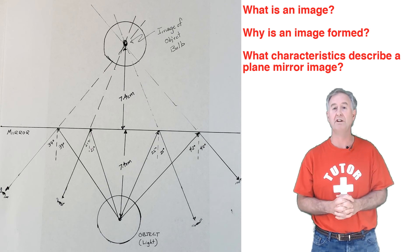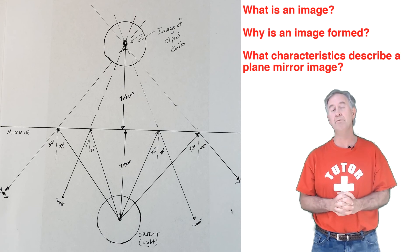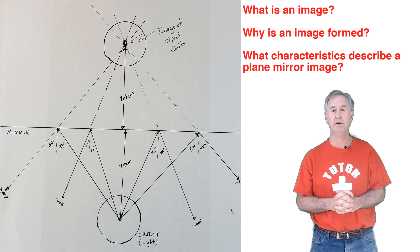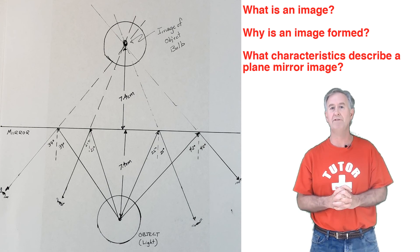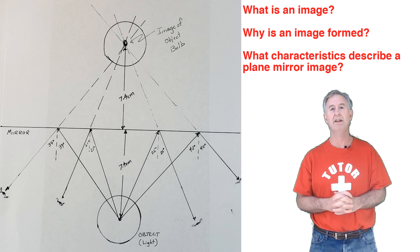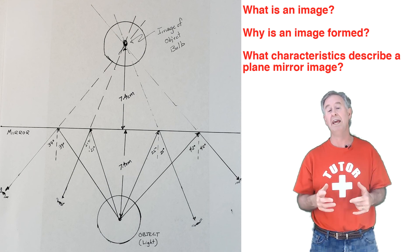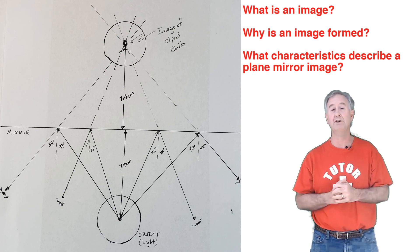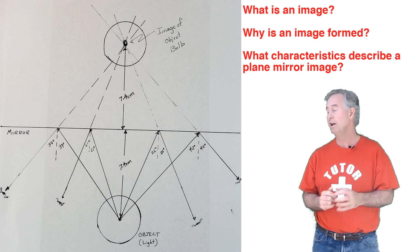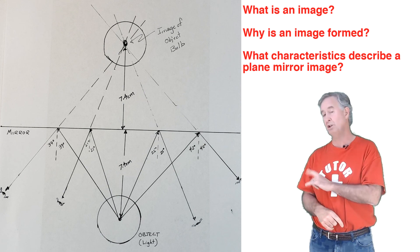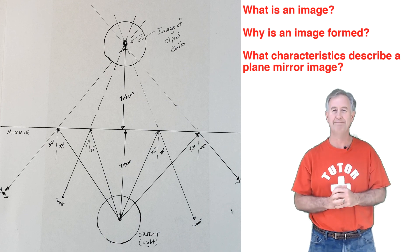As for the characteristics of a plane mirror image: first, the dimensions of the image are exactly the same as the dimensions of the object — they have the same size and the same diameter. Second, the distance from the object to the mirror is equal to the distance from the image to the mirror. These two distances are equal.